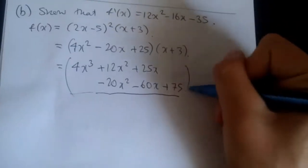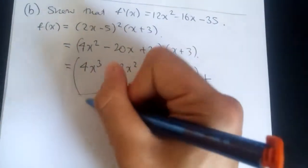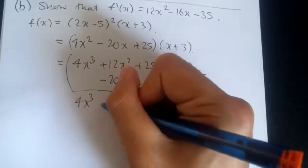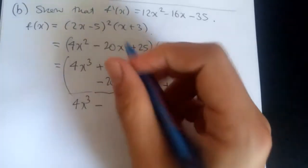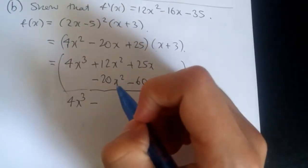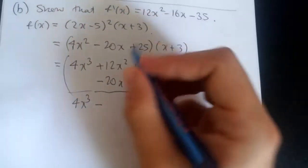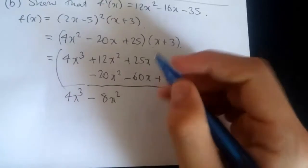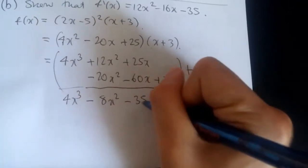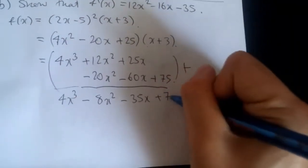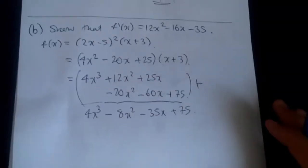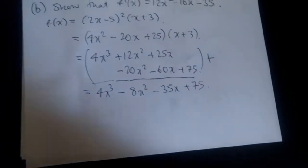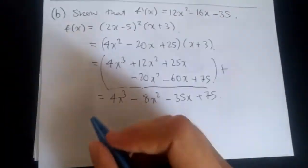So summing all these up because that's what we do. 4x³ is, of course, 4x³. 12x² minus 20 will give us minus... Hold on, let me just double check this one. Yep, will give us -8x². 25 take away 60 is -35x. And of course, we've got plus 75. So now we just have to differentiate this equation. Remember, this equals that. So taking the first derivative of this one, I think we can see we'll get it.